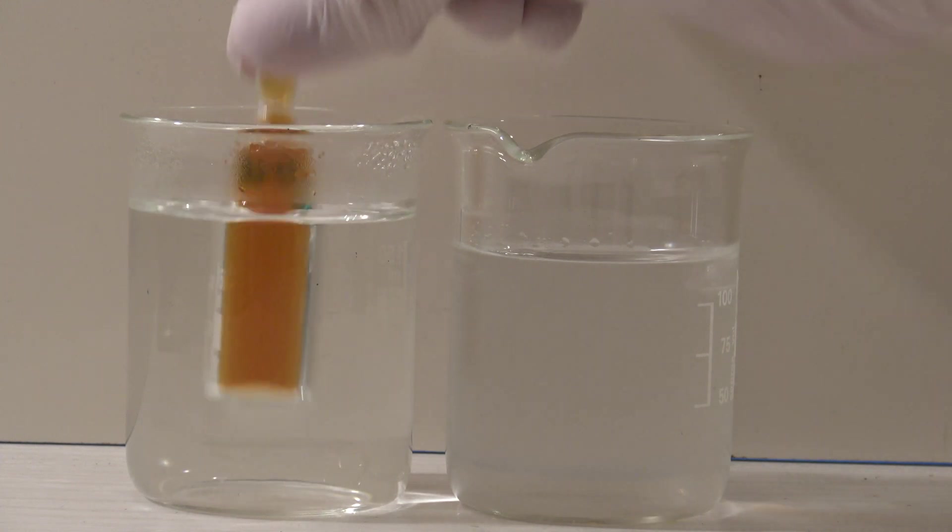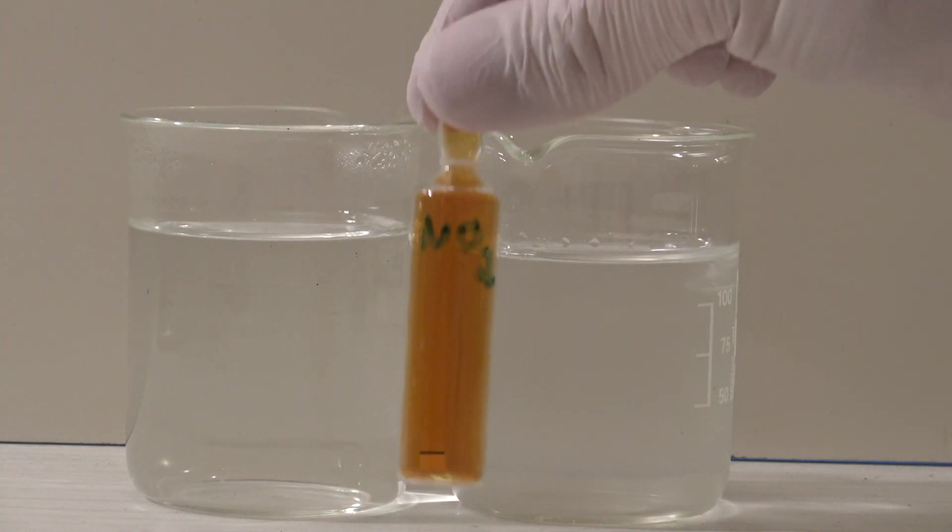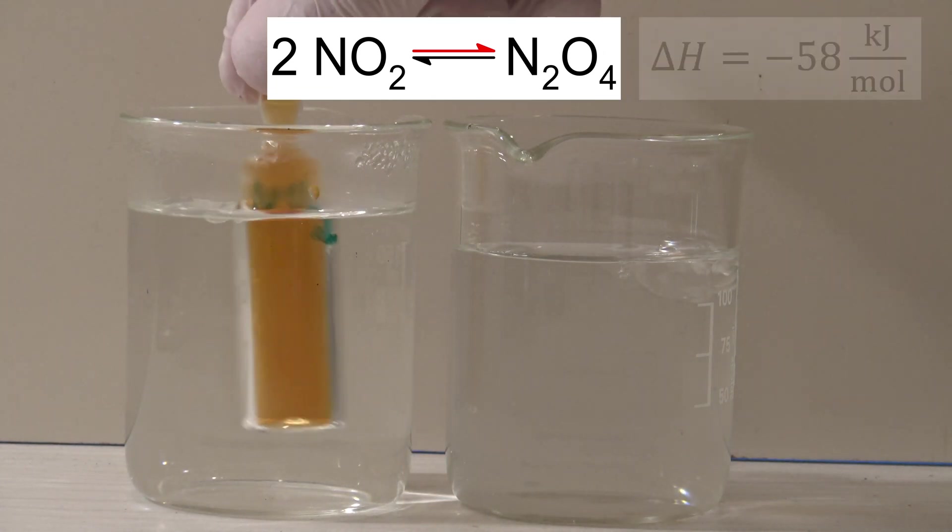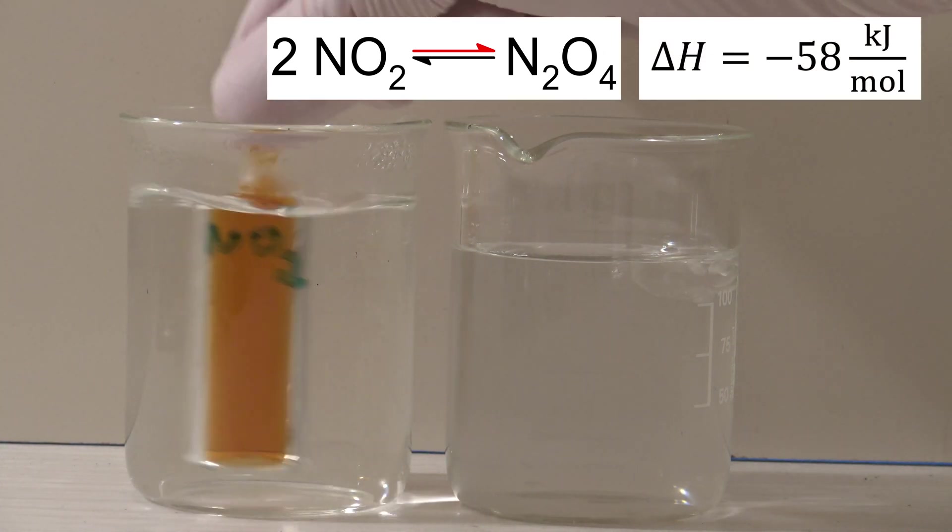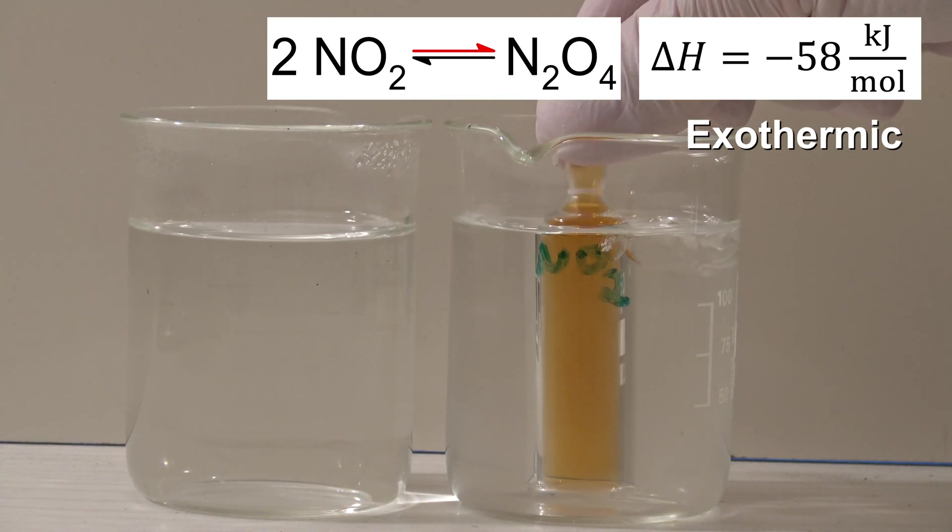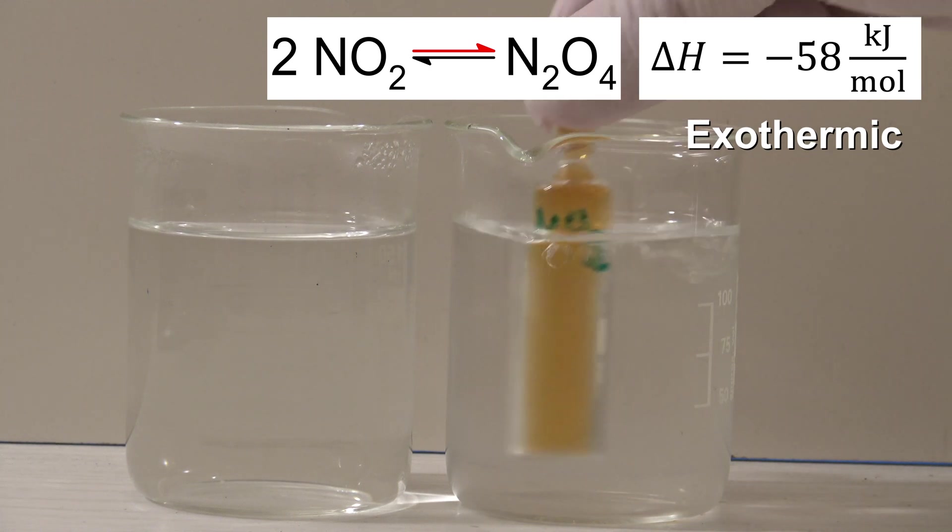In this case the effect is achieved by changing the temperature. The enthalpy of reaction of the forward reaction is negative, which means it's exothermic. When the gas is cooled, the equilibrium shifts to the right while energy is released to act against the cooling.